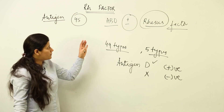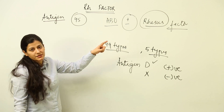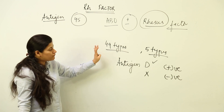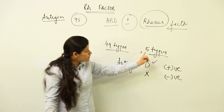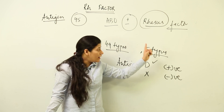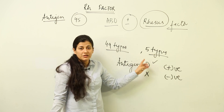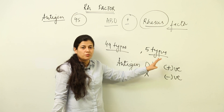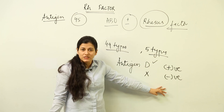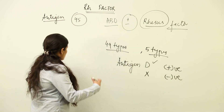If Antigen D is present, we add positive — Rhesus positive would be the blood group. And if Antigen D is absent, then the blood group is negative. So the most widely used type of blood grouping is ABO and Rhesus factor grouping. In the Rhesus category, we have 49 types of antigens; out of those 49, 5 types are of great importance, and out of those 5, Antigen D is responsible for telling whether the individual is positive or negative.